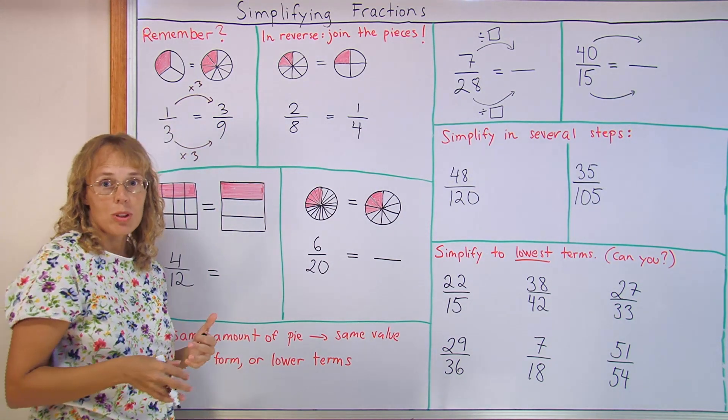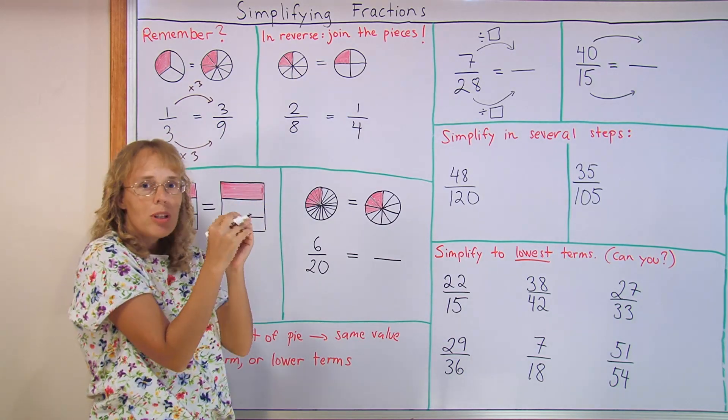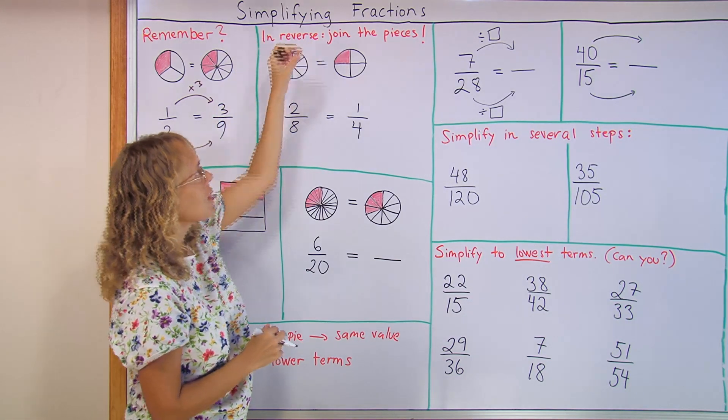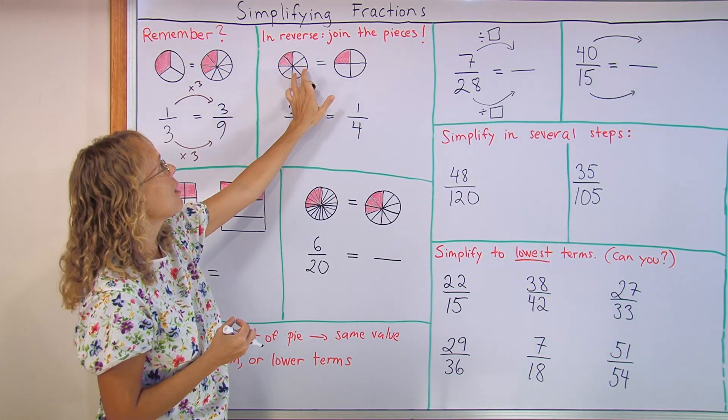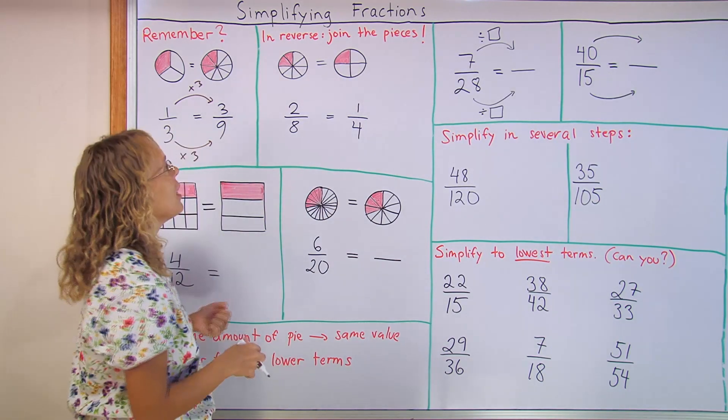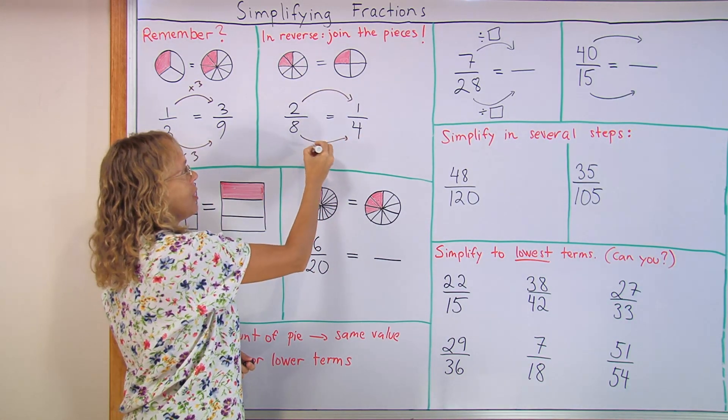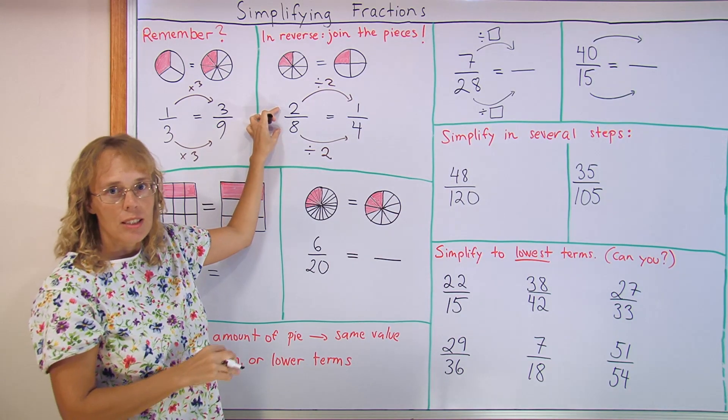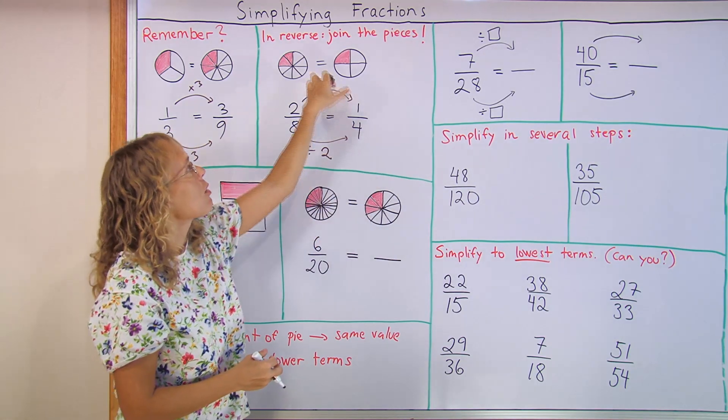Now we can reverse this process and instead of dividing the pieces further into smaller pieces, we take pieces and join them together to form larger pieces. These two eighths are joined together, they become this one piece here. Each two white pieces are joined together to become these pieces. So now we have less pieces. And we show it in a similar way with these arrows, but this time division. Both the numerator and denominator get divided by two. And so we have just half as many colored pieces and half as many total pieces in this picture.